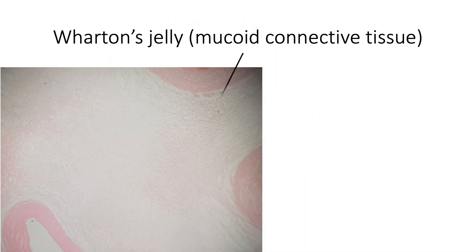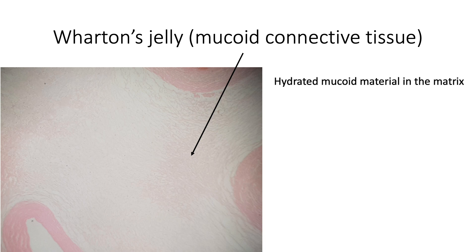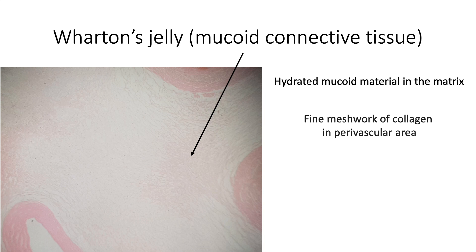Wharton's jelly, or mucoid connective tissue, shows hydrated mucoid material in the matrix, a fine meshwork of collagen seen predominantly in the perivascular area, and few fibroblast-like cells.